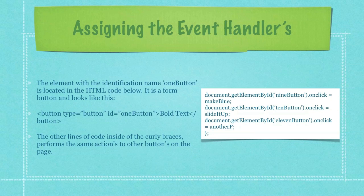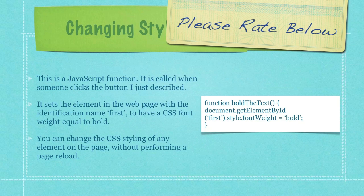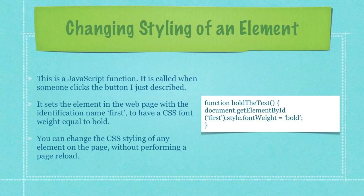When someone clicks this element, I want the function named bold the text to be called. The element with the identification name 'one button' is located in the HTML code below — it is a form button, and you can see it here. The other lines of code inside the curly braces perform the same actions to other buttons on the page. This JavaScript function is called when someone clicks that button and sets the element with the identification name 'first' to have a CSS font-weight equal to bold.